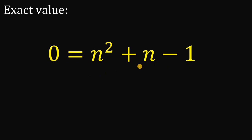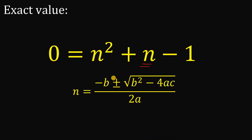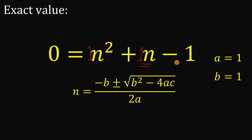This is a quadratic equation. To solve for the value of n, let's use the quadratic formula: n equals negative b plus or minus square root of b squared minus 4ac, all over 2a. Given this quadratic equation, the value of a is the numerical coefficient of n squared, which is equal to 1. So a equals 1. b is the numerical coefficient of n, which is again 1. And c is the constant term, which is equal to negative 1. Now since we have the values of a, b, and c, we are ready to solve for n.